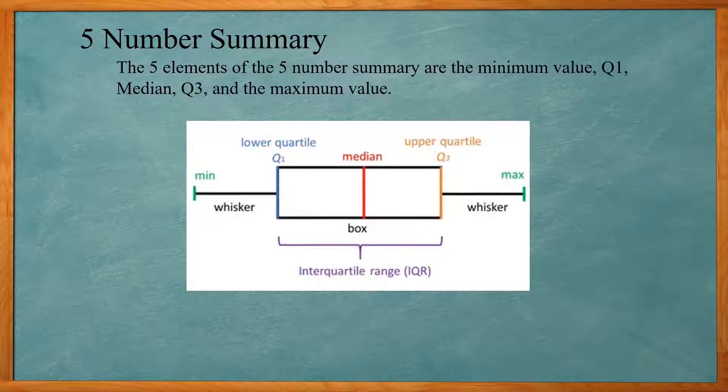Now we have the five number summary. For the five number summary, that includes the minimum value, the q1 value, the median, q3, and then the maximum value.